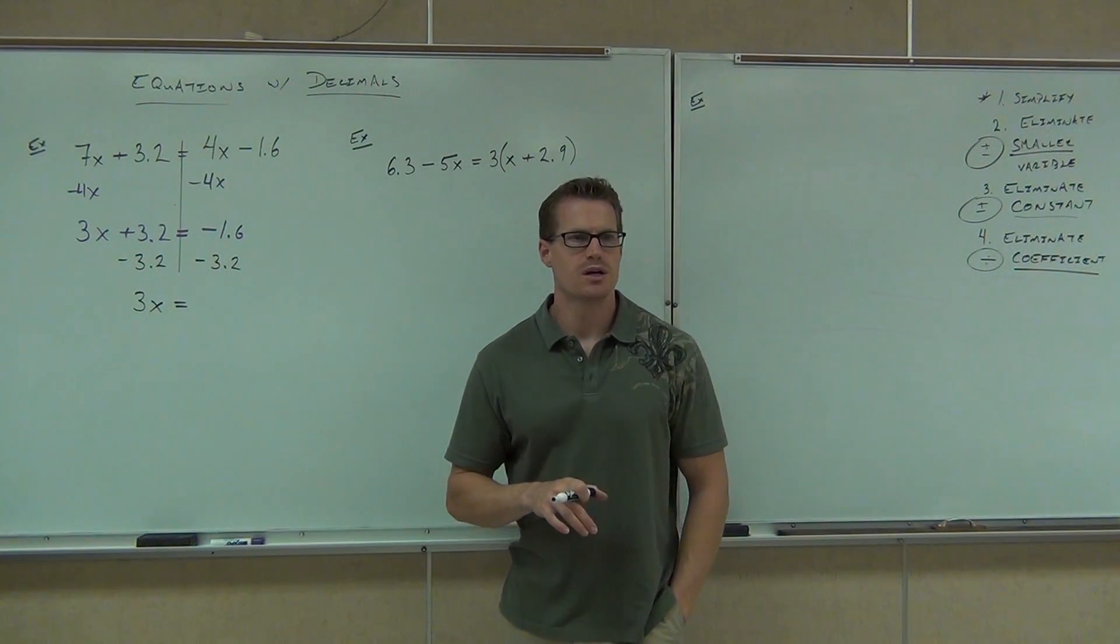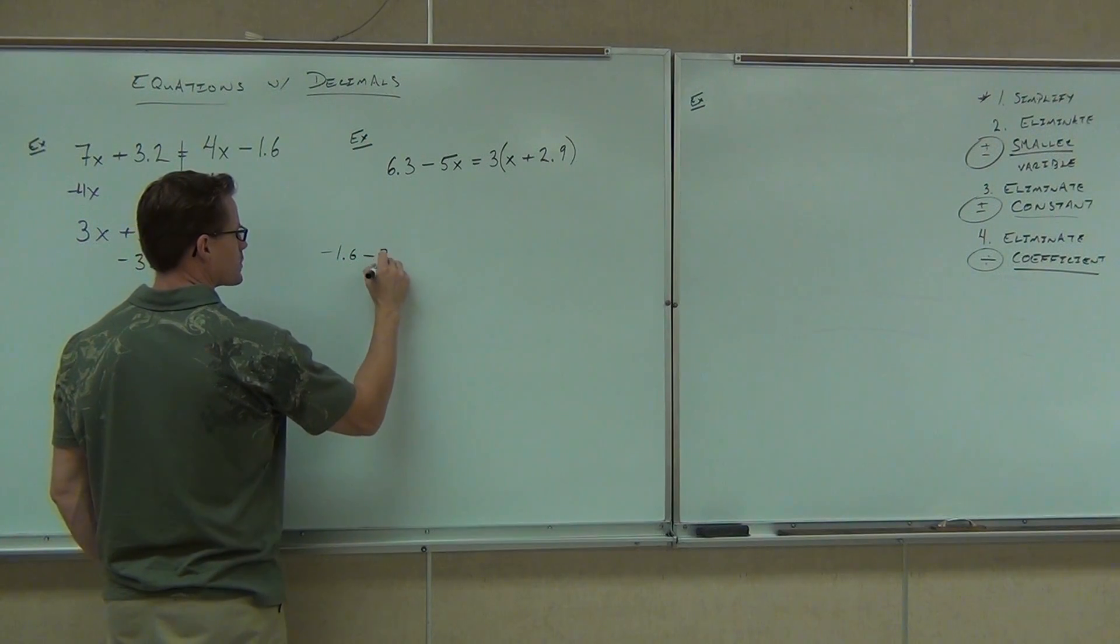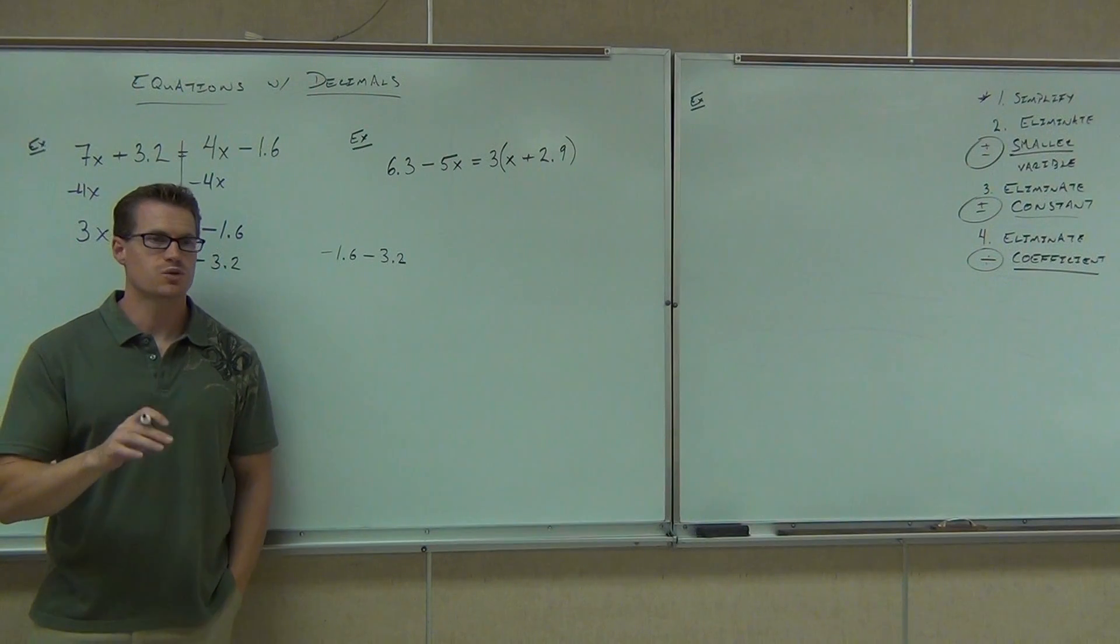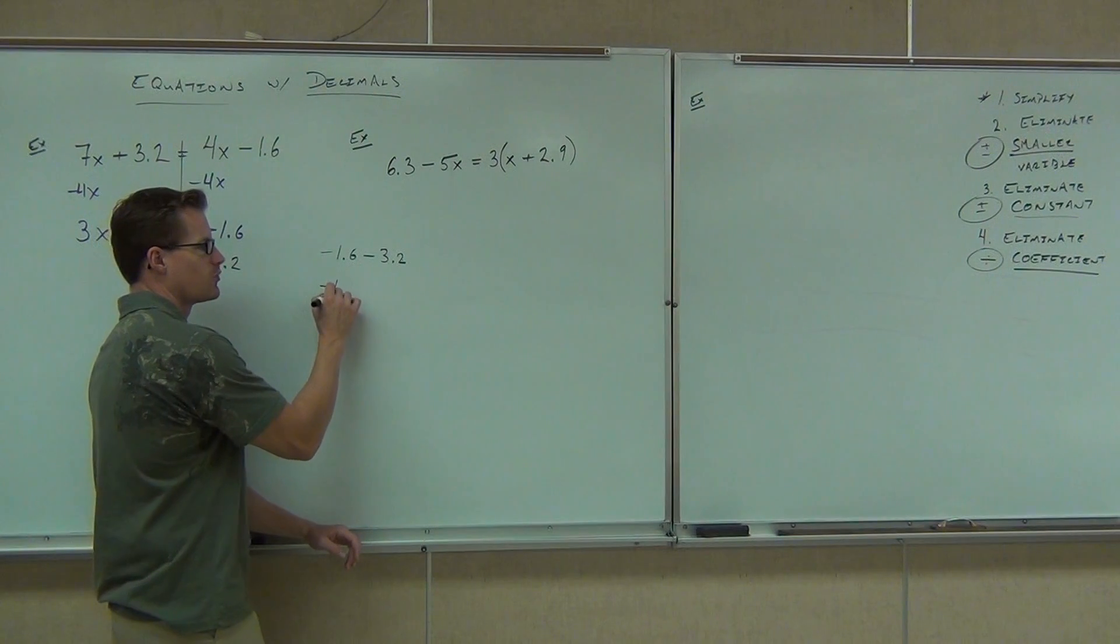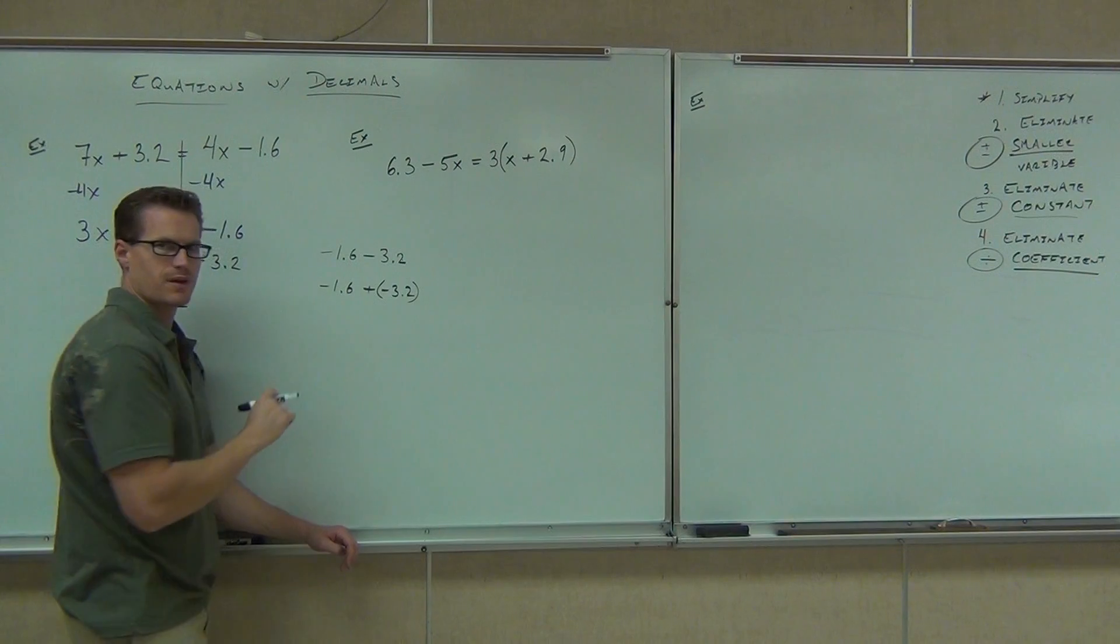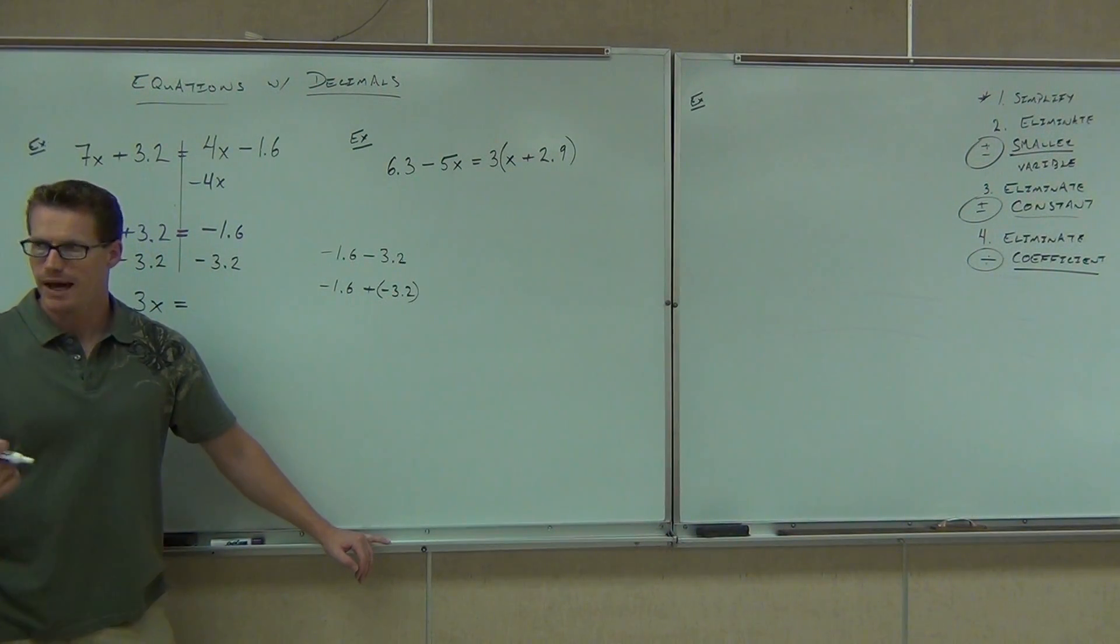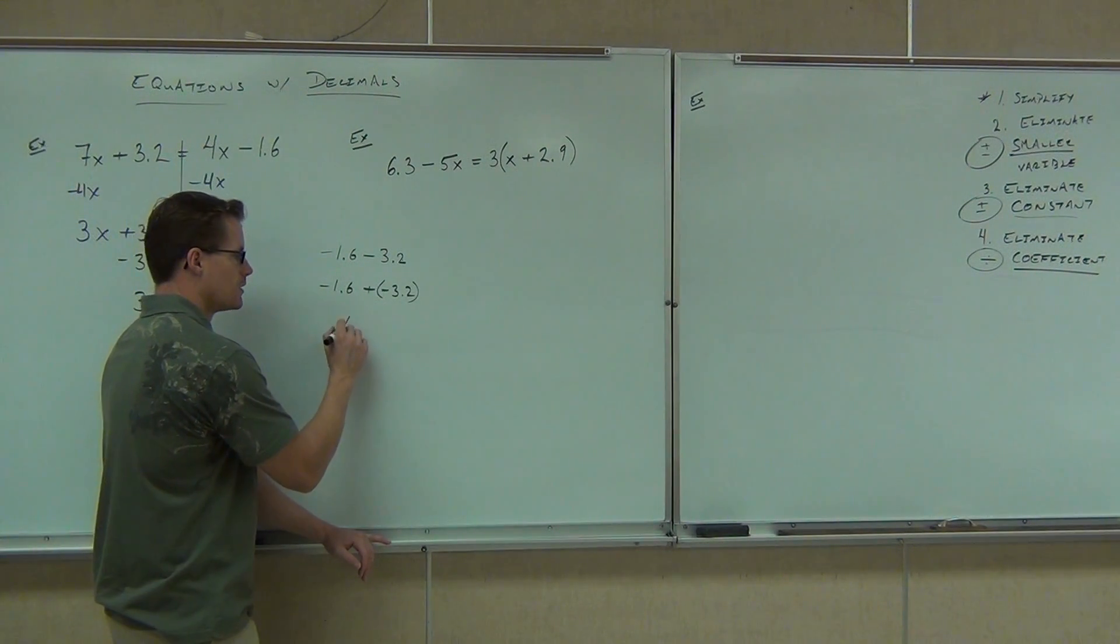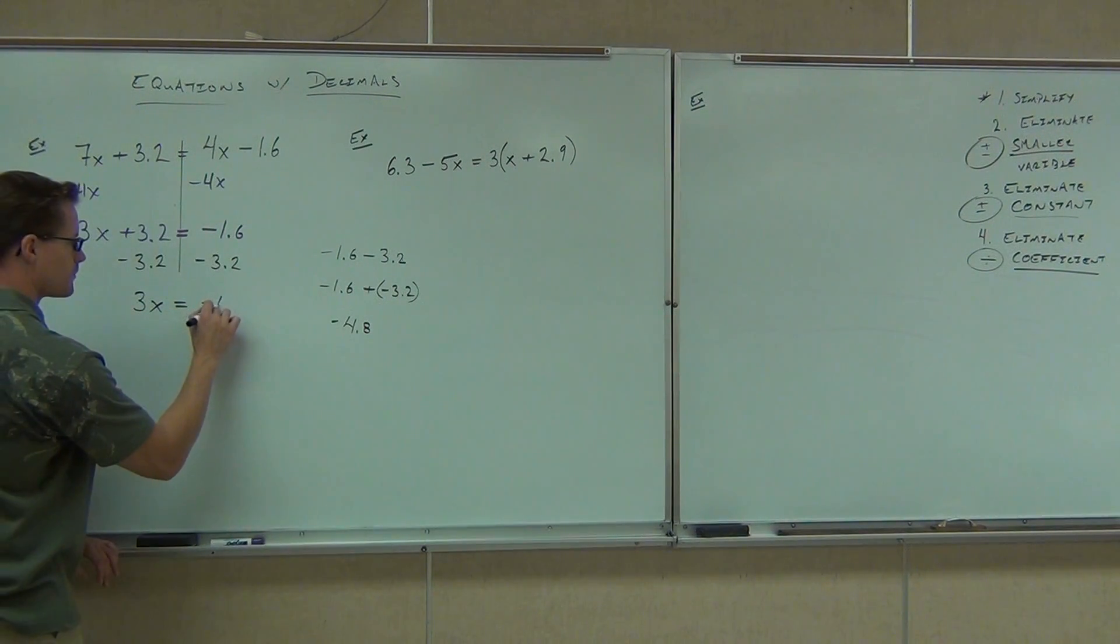So if we're going to do negative 1.6 minus 3.2, if you need it right off the side to get the right answer, do it off the side. Don't just do it in your head, otherwise you're going to make a mistake on this thing. Notice how this right here means negative 1.6 plus negative 3.2. You with me on that? Yeah. Signs same or different? Same. Add or subtract? Add. And keep the common sign, so you're going to keep it negative. So if I add these together, 4.8. Negative 4.8.